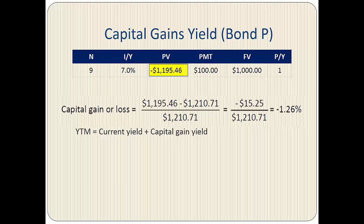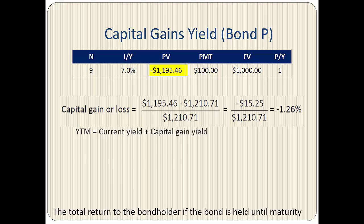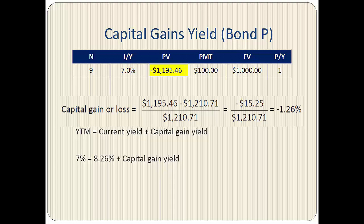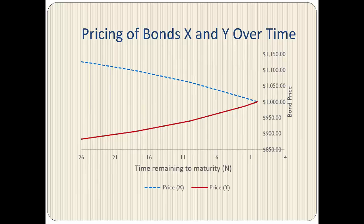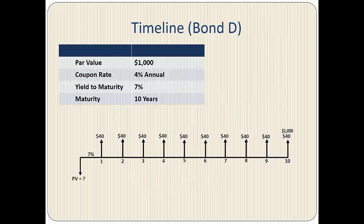Capital gain yield measures only the return from an increase or decrease in the price of a bond. We can verify our answer by equating yield to maturity to the sum of current yield and capital gain yield — the yield to maturity is the total return if the bond is held until maturity. So 7% equals 8.26% plus capital gain yield; therefore, capital gain yield equals negative 1.26%. A premium bond will always have a negative capital gain yield, because as we saw in Part 1, the price of a premium bond declines over time if yield to maturity remains unchanged, resulting in a capital loss.